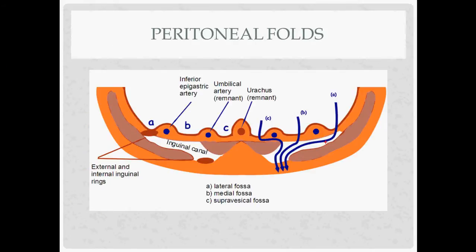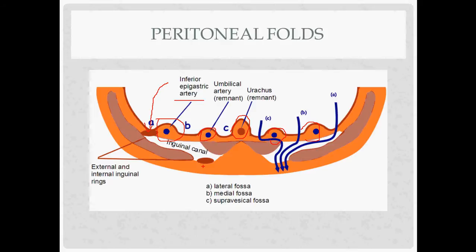Regarding peritoneal folds: the middlemost fold is called the median umbilical ligament. The two folds lateral to that are the medial ligaments. The most lateral are called the lateral folds of the peritoneum, and they house the inferior epigastric artery. The round ligament comes in lateral to the lateral fold, where it enters the inguinal rings.